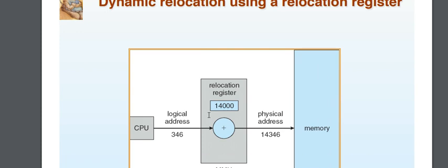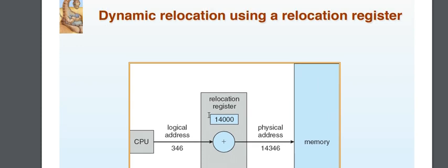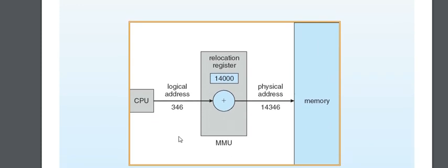This is dynamic relocation using a relocation register. There is a logical address in the CPU. When you open or access a file, the address format is converted — the physical address is a converted format — and then stored in memory.